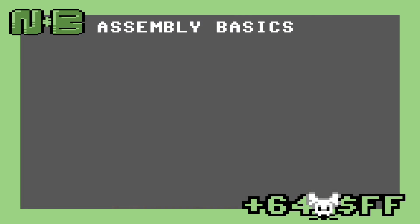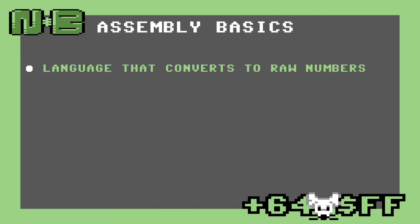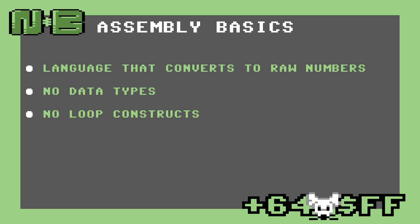Let's dive in. The first thing to know is that assembly is just a language that converts to numbers. There are no data types, no looping constructs, and it flows from top to bottom in general.